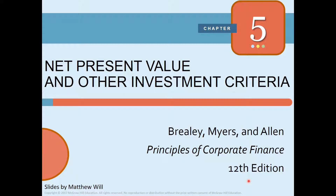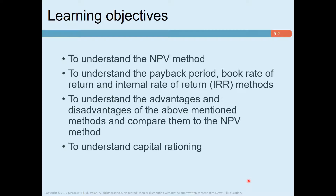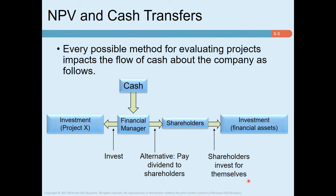Managers can best help their shareholders by investing in all projects with a positive NPV and rejecting those with a negative NPV. In Chapter 5 we start with a review of the net present value rule that we started discussing in Week 2. We then turn to other measures companies may look at when making investment decisions — book rates of return, payback period, and internal rate of return — as well as capital rationing.